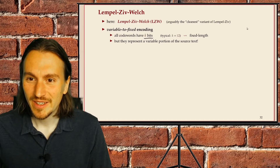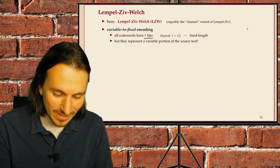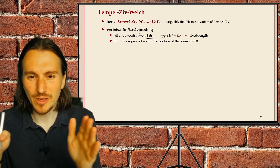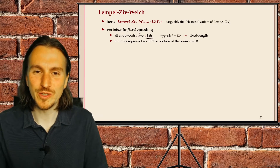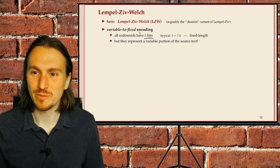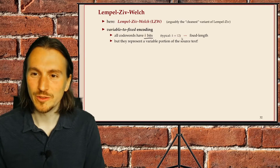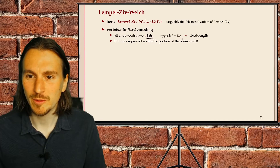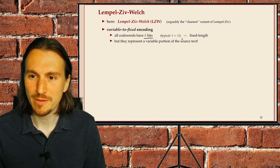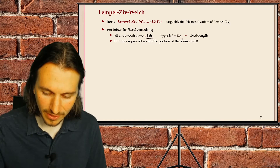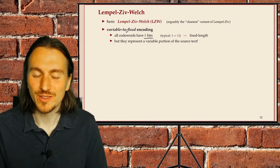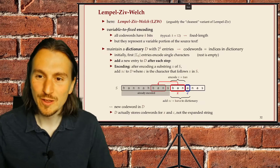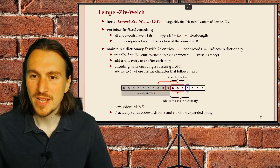LZW is a variable-to-fixed encoding: we take a variable-length part of the source text and encode it with a fixed number of bits. We'll use the typical choice of 12 bits, though that is a parameter you can tweak. This should be contrasted with Huffman coding, where it was fixed-to-variable.